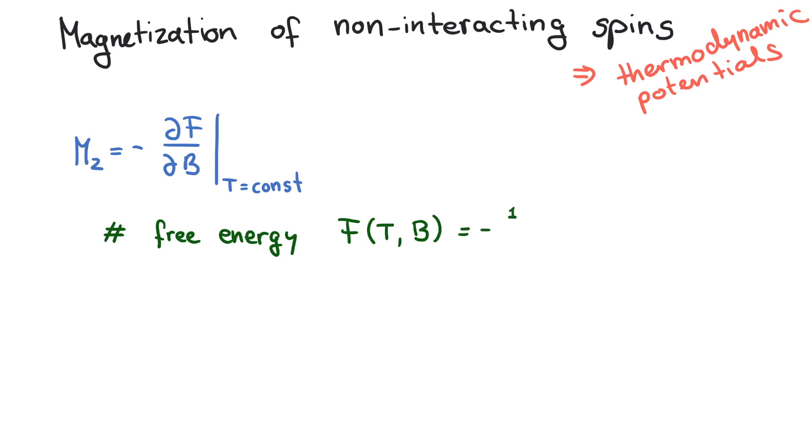It is always given by minus 1 over beta times the logarithm of Z. Z is what we got to know as normalization. It is the sum over all states weighted by the Boltzmann factor.